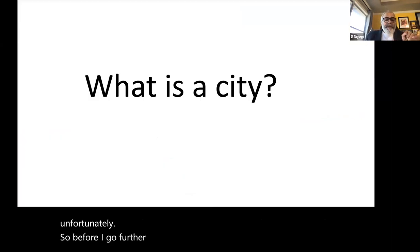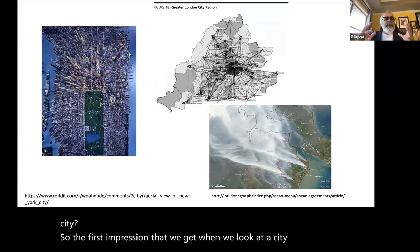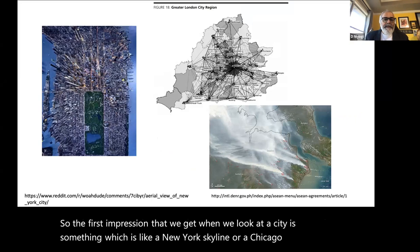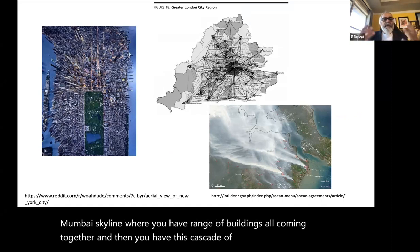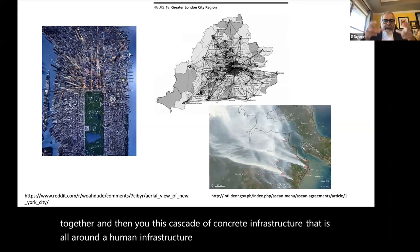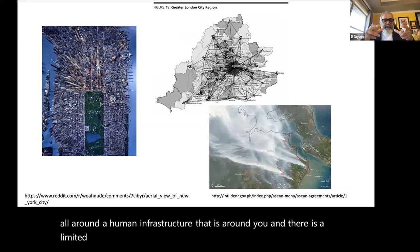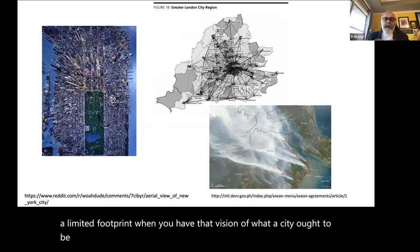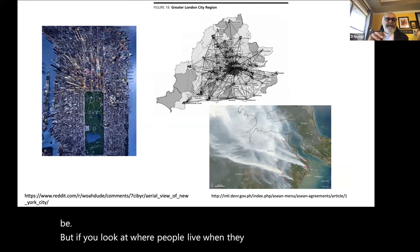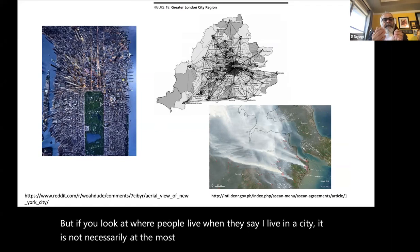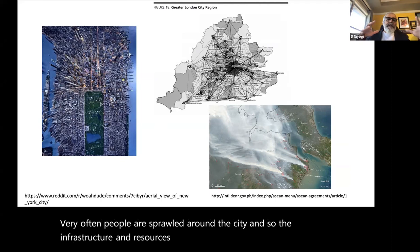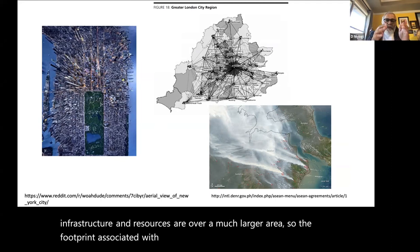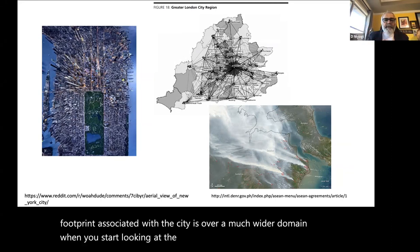What is a city? The first impression is a skyline like New York or Mumbai — a cascade of concrete infrastructure with a limited footprint. But where people actually live when they say 'I live in a city' is not necessarily in the most concentrated high-rise areas. Very often people are sprawled around, so the infrastructure and resources span a much larger area, especially when you consider mobility.